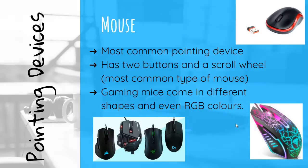Input devices — Mouse: The most common pointing device, it has two buttons and a scroll wheel. Gaming mice come in different shapes and even RGB colors. Here are some examples of different gaming mice with RGB lights on display, and a wireless mouse.